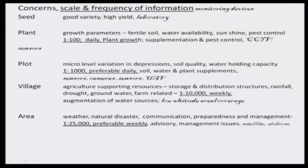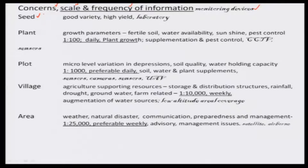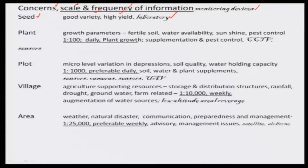Let me start with the seed. As a farmer, I need a good seed — good variety should be there as well as high-yielding variety. The monitoring involves laboratory testing before buying the seed to check quality. Once the seed needs to be planted, there are growth factors to consider: fertile soil, water availability, sunshine, and pest control. Sunshine is left to global activity and pest control is seasonal. We can concentrate on fertile soil and water availability.